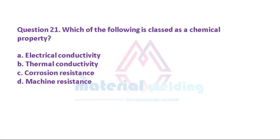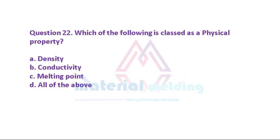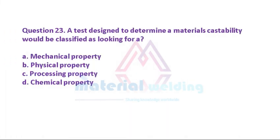Question 21: Which of the following is classed as a chemical property? A. Electrical conductivity. B. Thermal conductivity. C. Corrosion resistance. D. Machine resistance. Question 22: Which of the following is classed as a physical property? A. Density. B. Conductivity. C. Melting point. D. All of the above. Question 23: A test designed to determine a material's castability would be classified as looking for: A. A mechanical property. B. Physical property. C. Processing property. D. Chemical property.